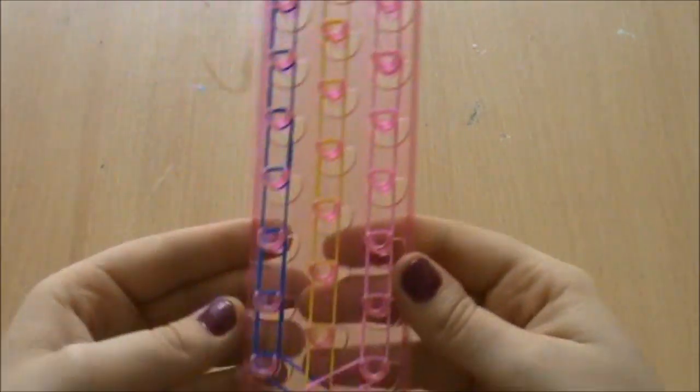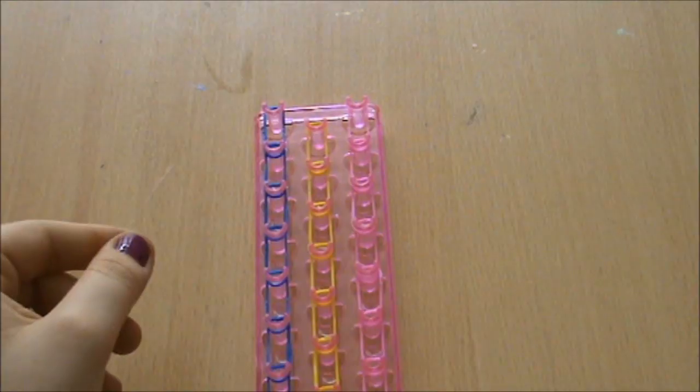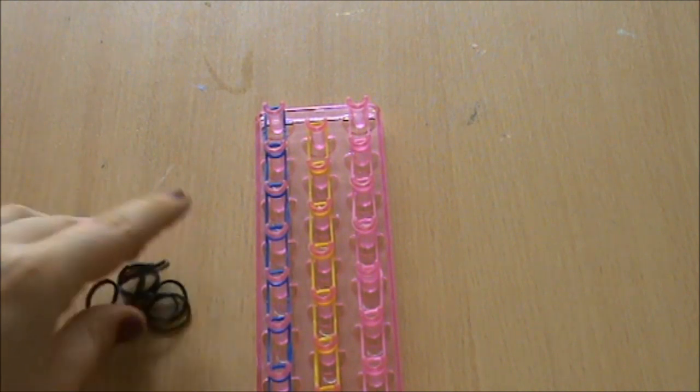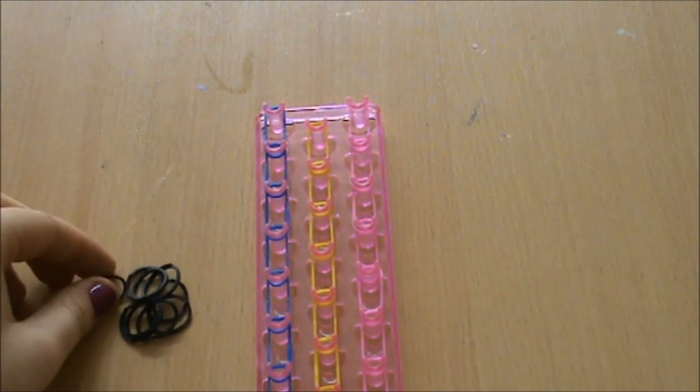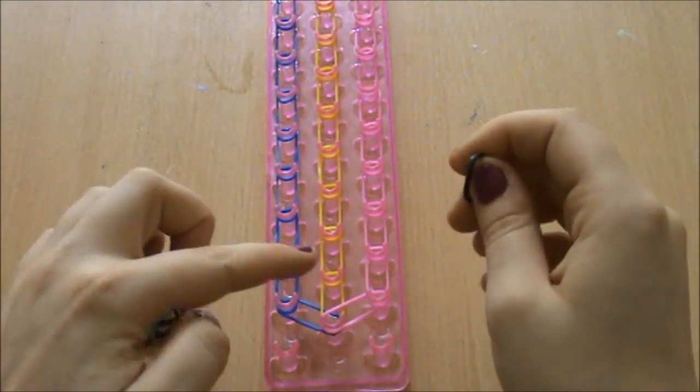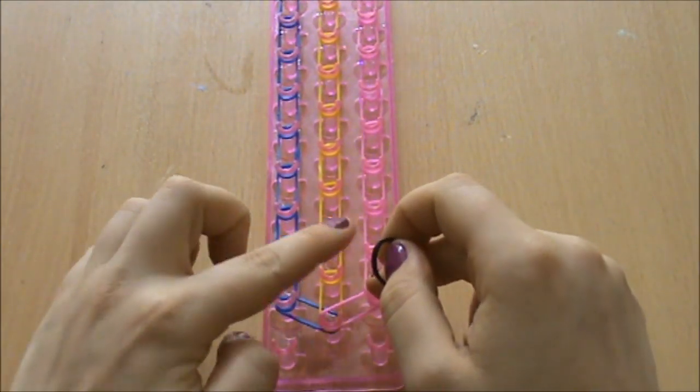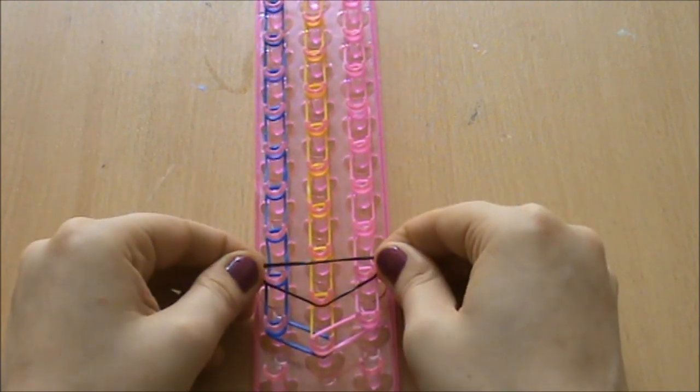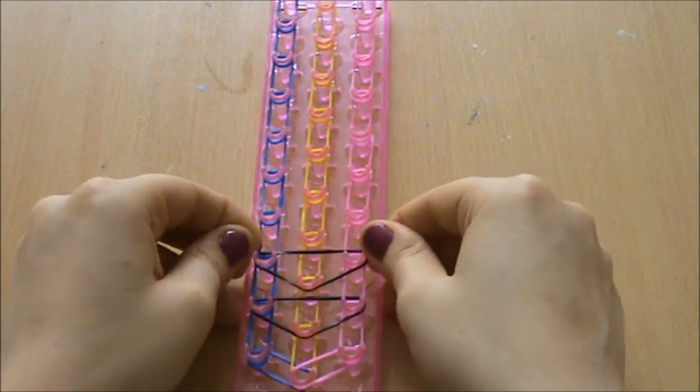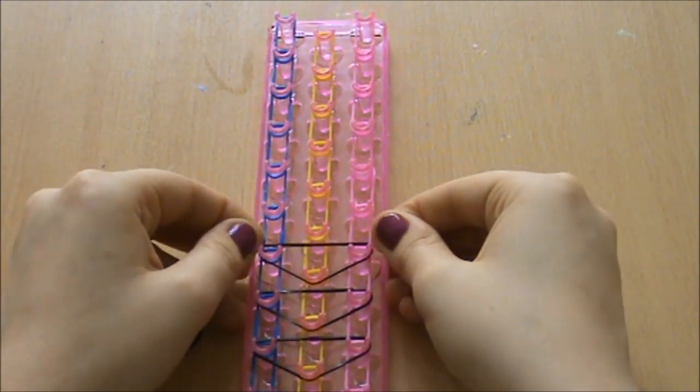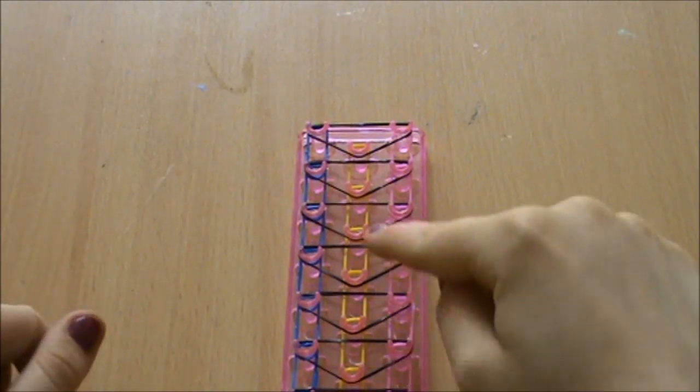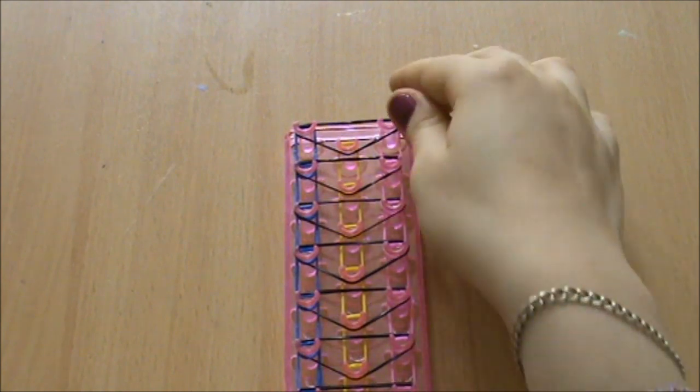So each of the pegs have bands on except for the bottom two. And now you need to grab your centre colour which is black and you'll need nine of those. And then you're just starting at the bottom, not with the first three pegs but the next three pegs. You're making an upside down triangle shape over three of the pegs. And you're just doing that all the way up to the top.